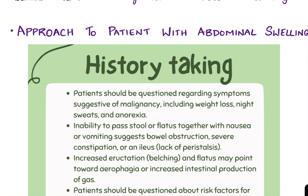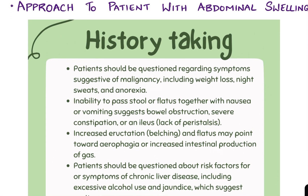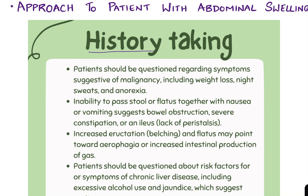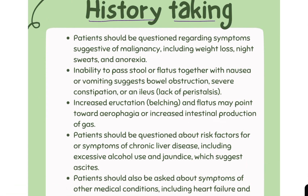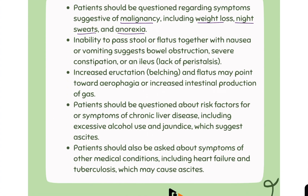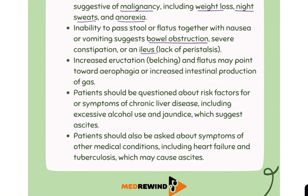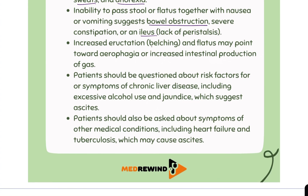Regarding the approach to the patient with abdominal swelling, the first important step is history taking. The patient should be questioned about symptoms suggestive of malignancy, including weight loss, night sweats, and anorexia. Inability to pass stool or flatus together with nausea or vomiting suggests bowel obstruction, severe constipation, or ileus. Increased belching and flatus may point toward aerophagia or increased intestinal gas production.